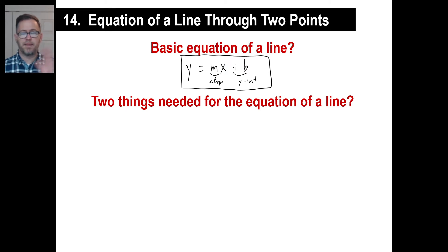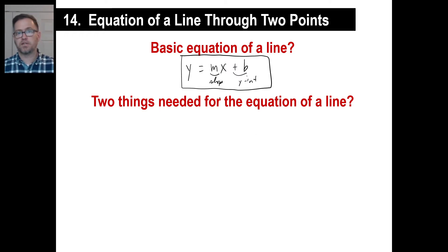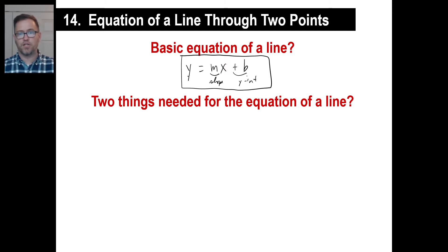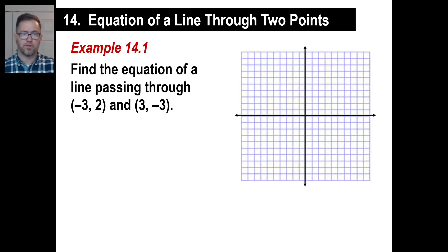Just write, without even thinking, y equals slope x plus the y-intercept. Boom — y equals mx plus b. The two things you need for the equation of a line are the slope and the y-intercept. You don't have to worry about x and y — they'll take care of themselves. You get the m, you get the b, and you got it. So let's find those two things.